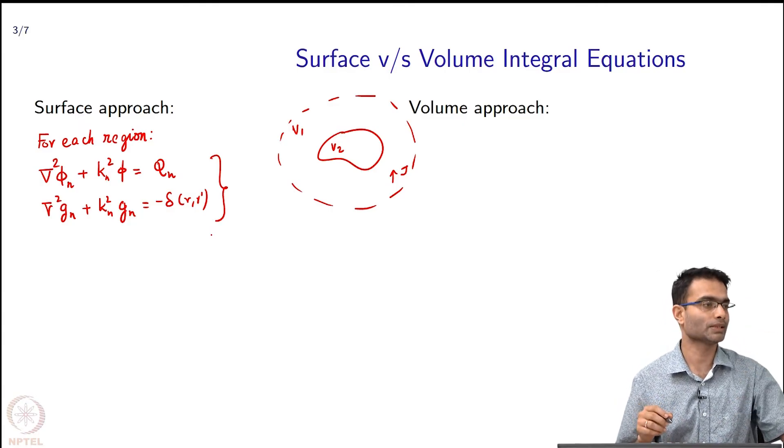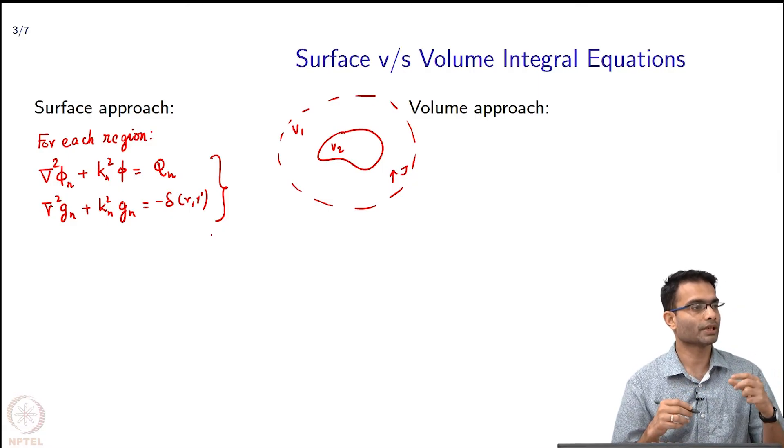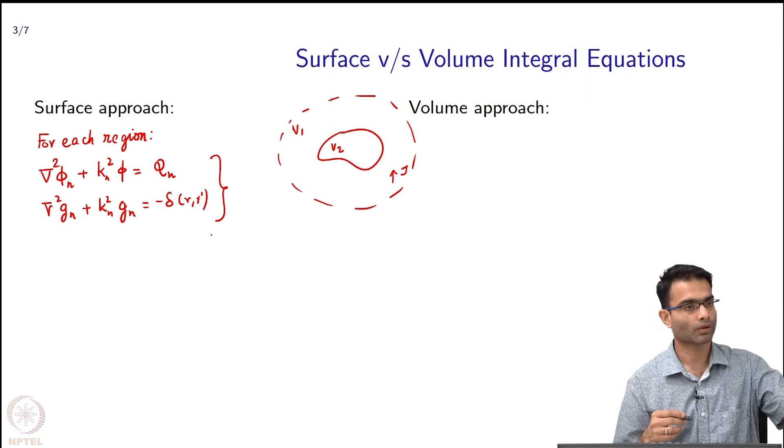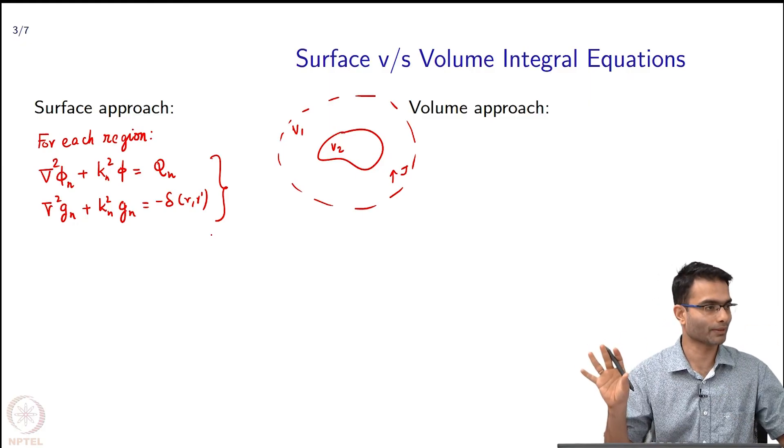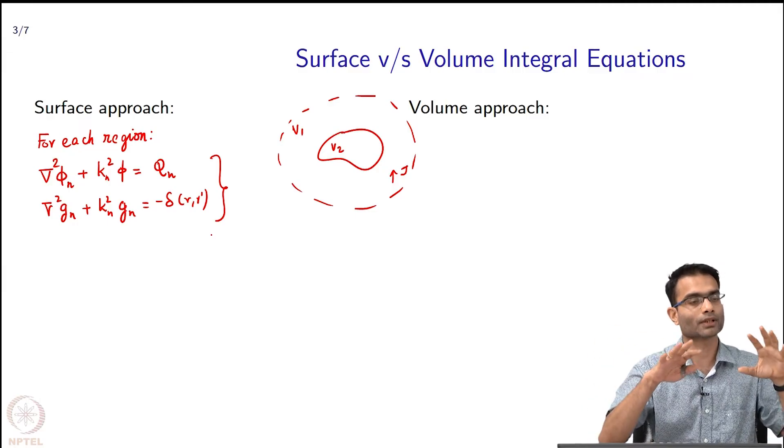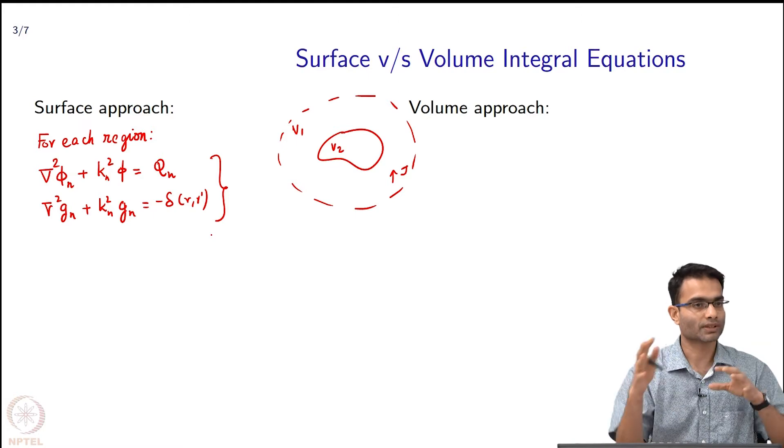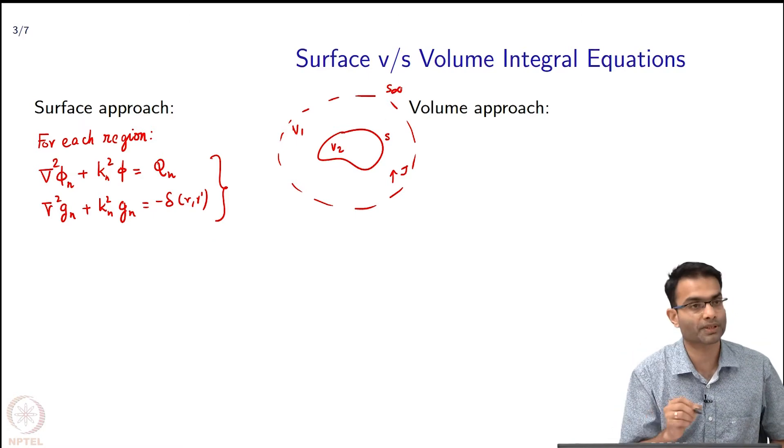I multiplied one by g, the other by φ, subtracted them, but I never mixed the equations for region 1 or volume 1 with the equations for volume 2. I solved them separately and then I applied some theorems, some vector calculus which converted a volume integral into a surface integral. That is how the surface S and S infinity came into picture.